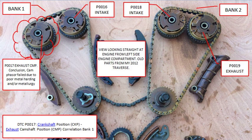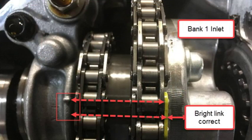A faulty camshaft position sensor, CMP, is also a potential cause. The CMP sensor monitors the position of the camshaft and sends that information to the ECU — if faulty, it can send incorrect information leading to the P0017 code being stored. Additionally, a damaged or stretched timing chain, which synchronizes the rotation of the crankshaft and camshaft, can cause them to be out of sync and trigger the P0017 code.